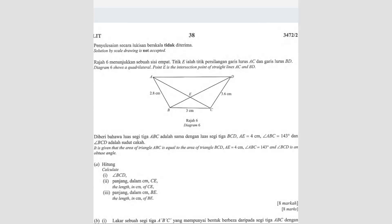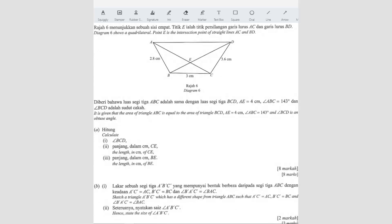Question number 14. Solution by scale drawing is not accepted. Diagram 6 shows a quadrilateral, point E is the intersection point of straight line A, C and B, D.